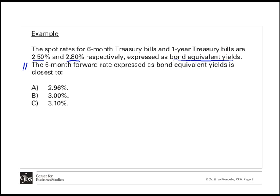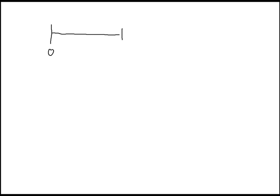To visualize the calculation, we use a timeline consisting of two semi-annual periods, spanning one year in total. The first alternative is to invest money over one year at the 1-year spot rate of 2.8%. Alternatively, we can invest the money over 6 months using the 6-month spot rate.